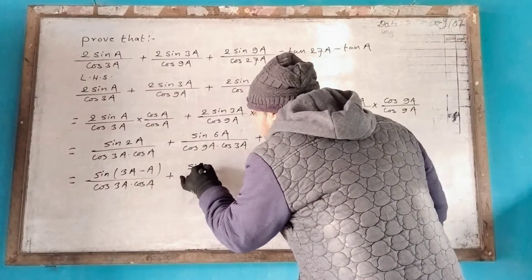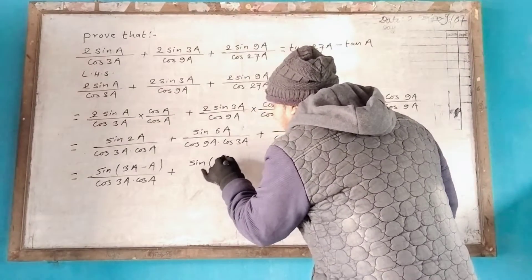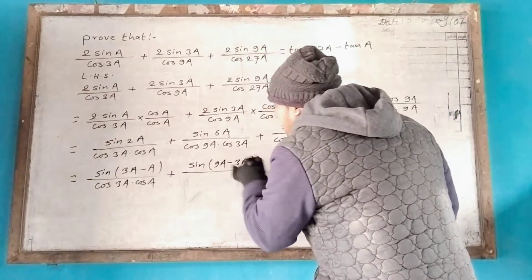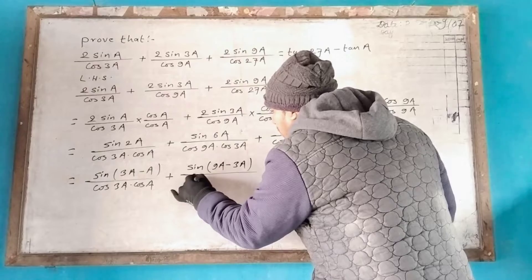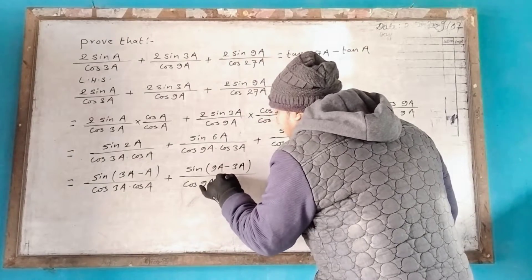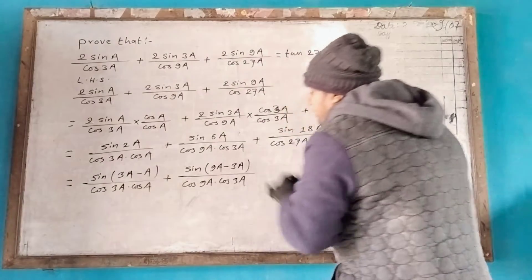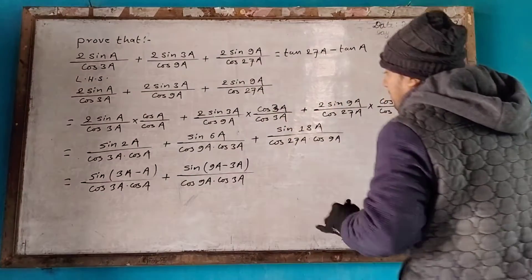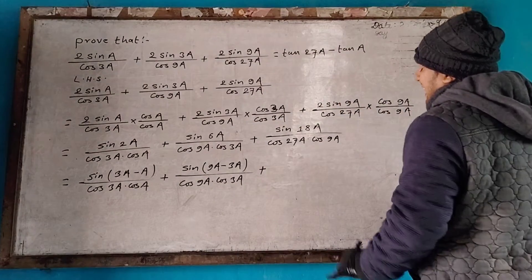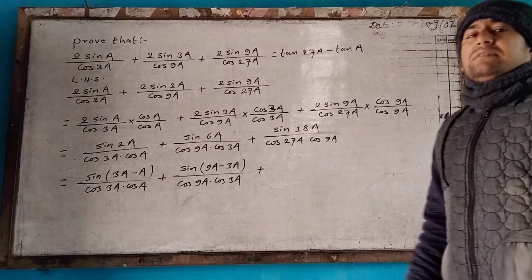So sin(9a − 3a) divided by cos 9a into cos 3a, plus sin 18a. So this is the denominator.